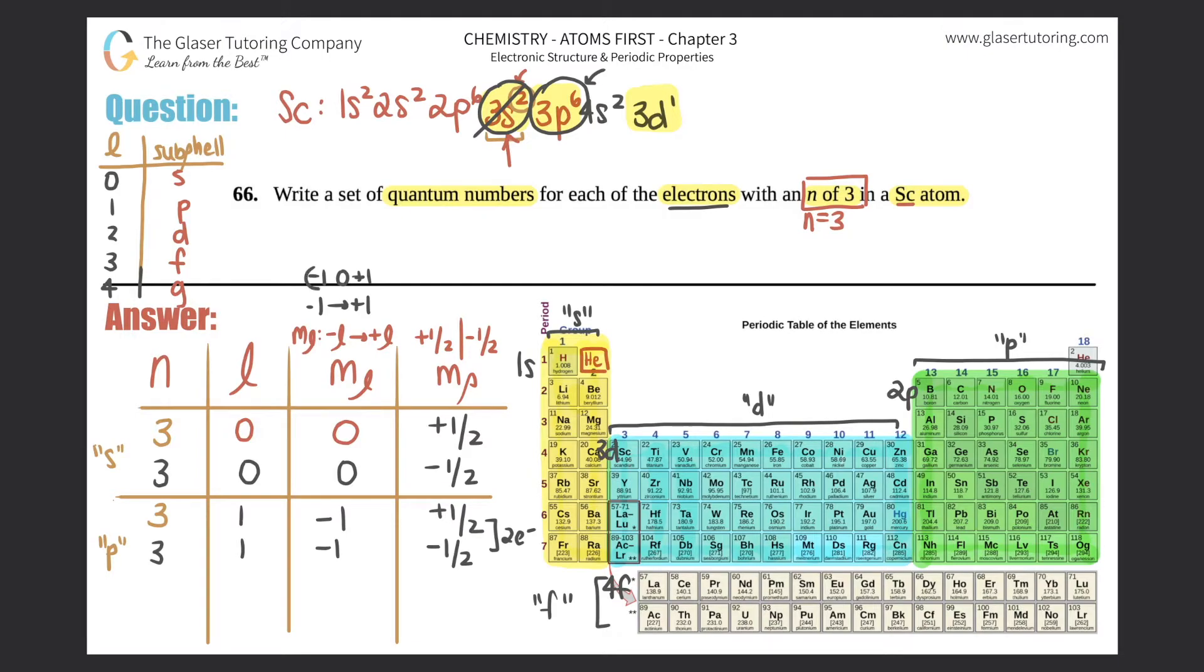So then we have 3, 1, because we're still in p, but now we got to deal with the zero ml. And in there you have the two electrons, so plus 1/2, and then 3, 1, 0, minus 1/2. And that's the other two electrons. Now we have a total of four. You see where we're going with this.